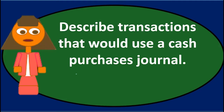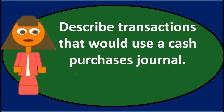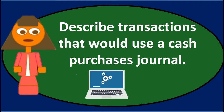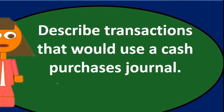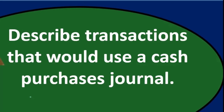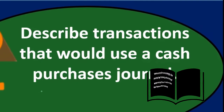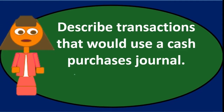If we look at a cash purchases journal, we have to assume we are using some type of system that uses special journals to record transactions. With special journals, we're not recording every transaction with a journal entry in the general journal one by one, but instead putting that information into a special journal, adding it up for the month, recording it monthly into the general journal, posting to the general ledger, and finally producing the trial balance and financial statements.